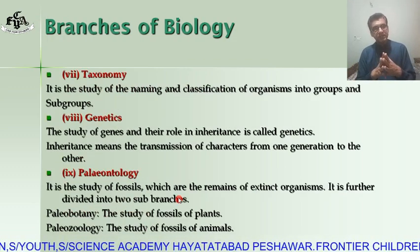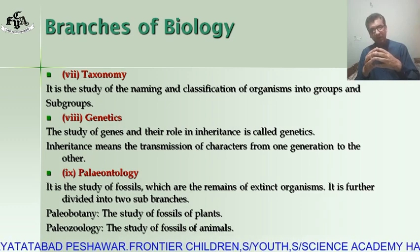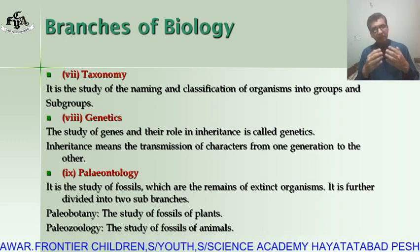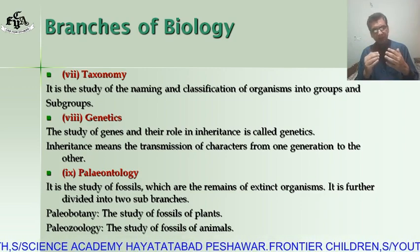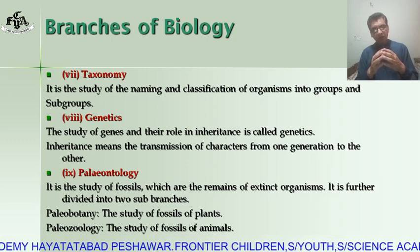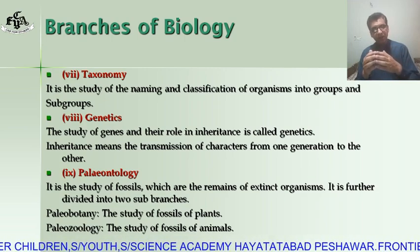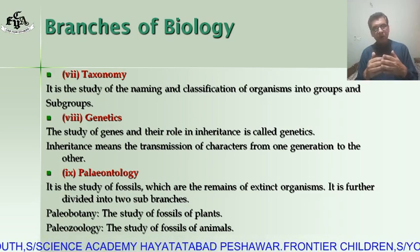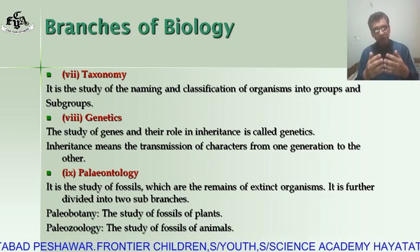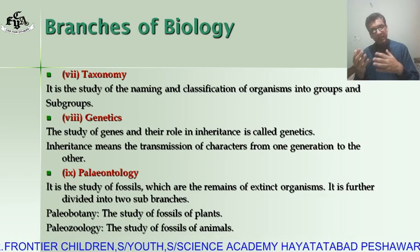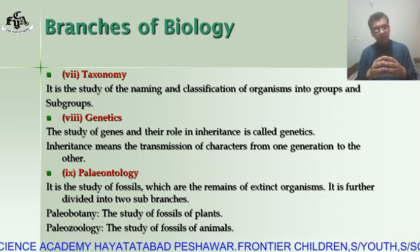The next branch is taxonomy. Taxonomy is the study of naming and classification of organisms into groups and subgroups on the basis of similarities and differences. This branch deals with how we divide different organisms into groups, and also explains the rules and regulations for giving scientific names to living organisms. We will discuss taxonomy in detail in some upcoming chapters.